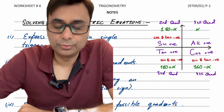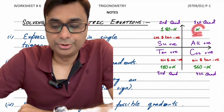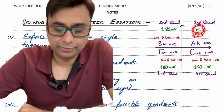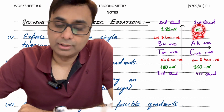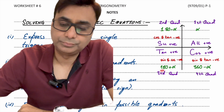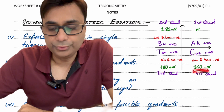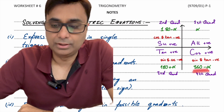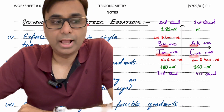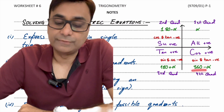You also need to learn the angle formulas per quadrant in terms of the basic angle alpha. In the first quadrant, the angle equals alpha. In the second quadrant, it is 180 minus alpha. In the third quadrant, it is 180 plus alpha. And in the fourth quadrant, it is 360 minus alpha. You must remember which trig ratio is positive in each quadrant and the angle expressions.